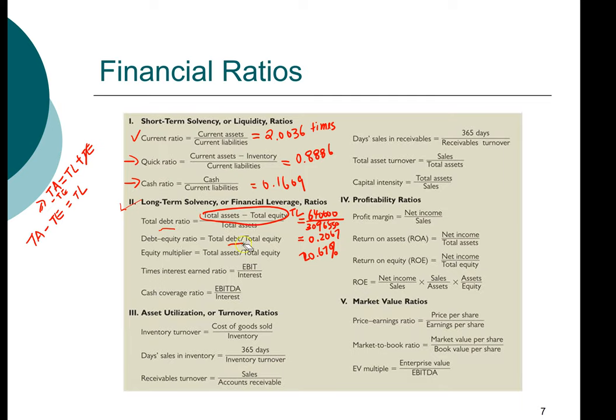Another thing that I want to point out is the term debt and liability is used interchangeably. So now that we have computed the total liability, we know the numerator for the second equation, which is total debt. So that's also $640,000. I'm going to have you pause the video at this point and compute the next two ratios on your own.